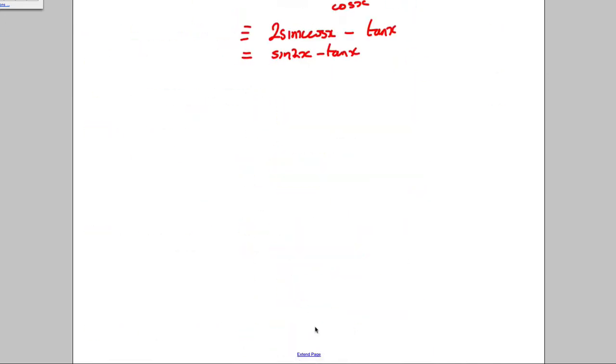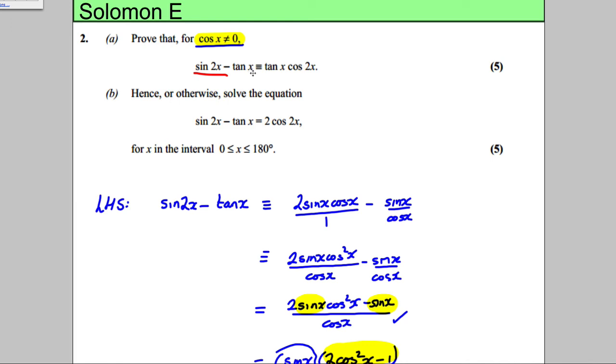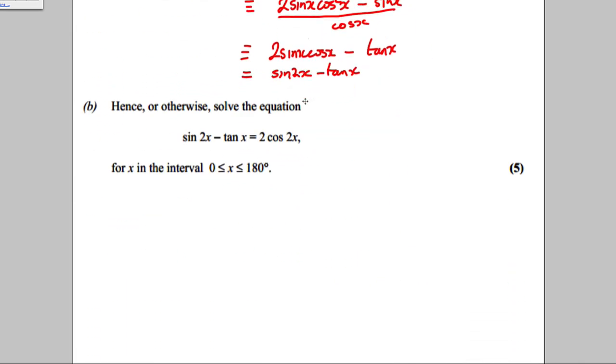It says, hence or otherwise, let's solve this. Always use the hence. So, sine 2x subtract tan x. Do we have an identity for this? Sine 2x subtract tan x is tan x cos 2x.